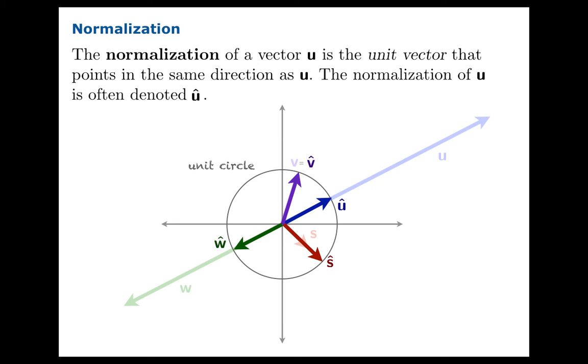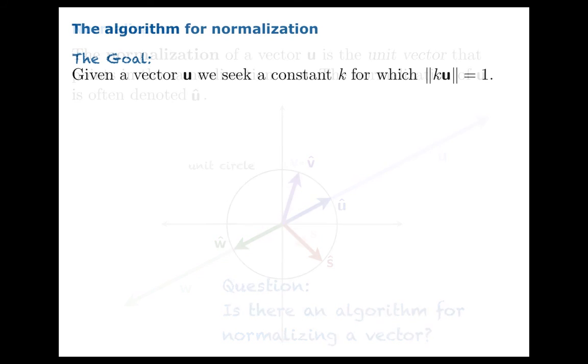Clearly normalization involves some sort of scaling to get it to have magnitude 1. And the question is, is there an algorithm? Is there an automatic way to do this? And the answer is yes. It's not so hard. And the goal is to find this k that we would multiply by u so that the norm of the resulting vector is 1.